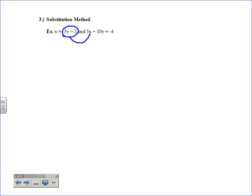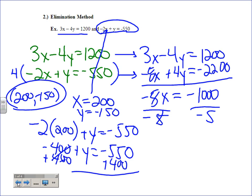Now for the substitution method. The graphical method works well if equations are in y-equals form. Elimination works well if both are in standard form. Substitution works well if one equation is already solved for a variable. Here, one equation says x equals negative 3y minus 2. Wherever we see an x in the other equation, we replace it with negative 3y minus 2. So we write 3 times the quantity negative 3y minus 2, then continue with the rest of the equation.